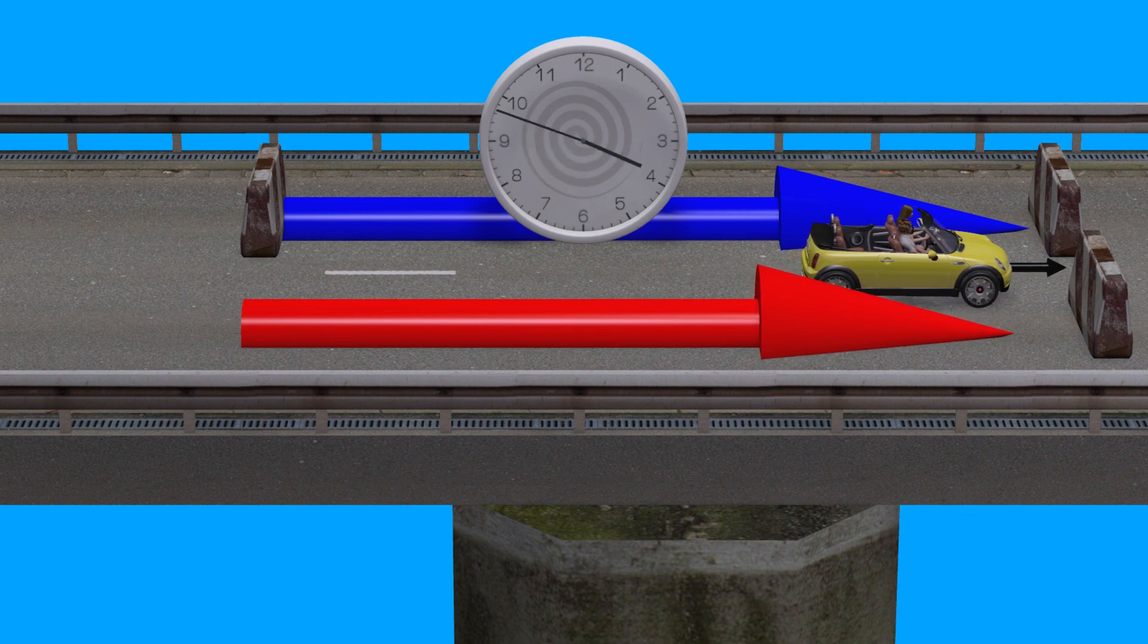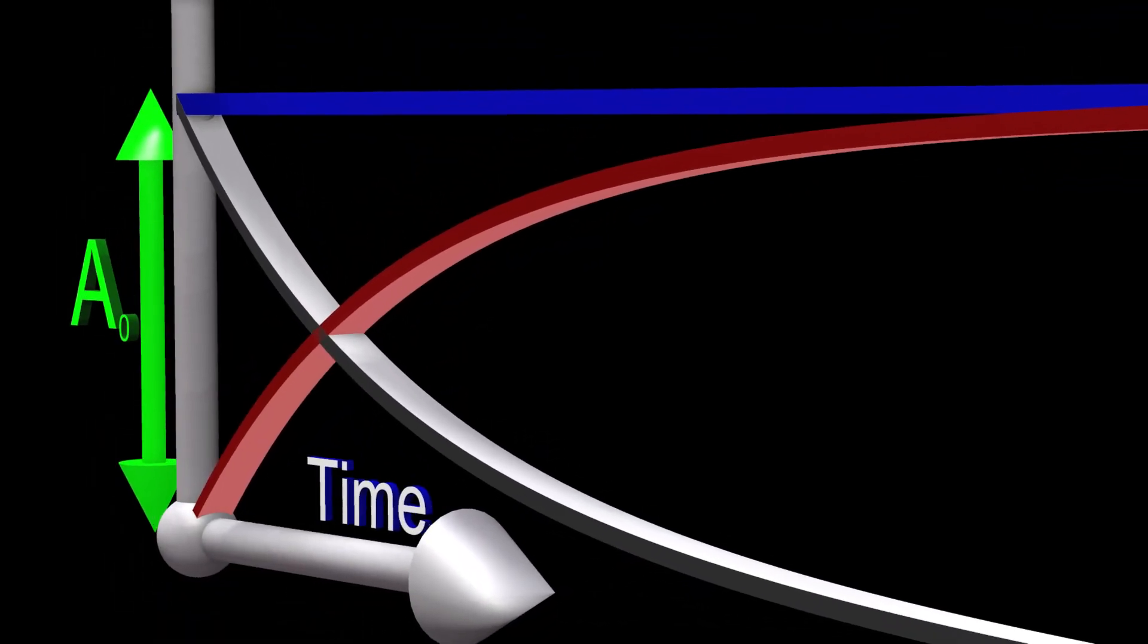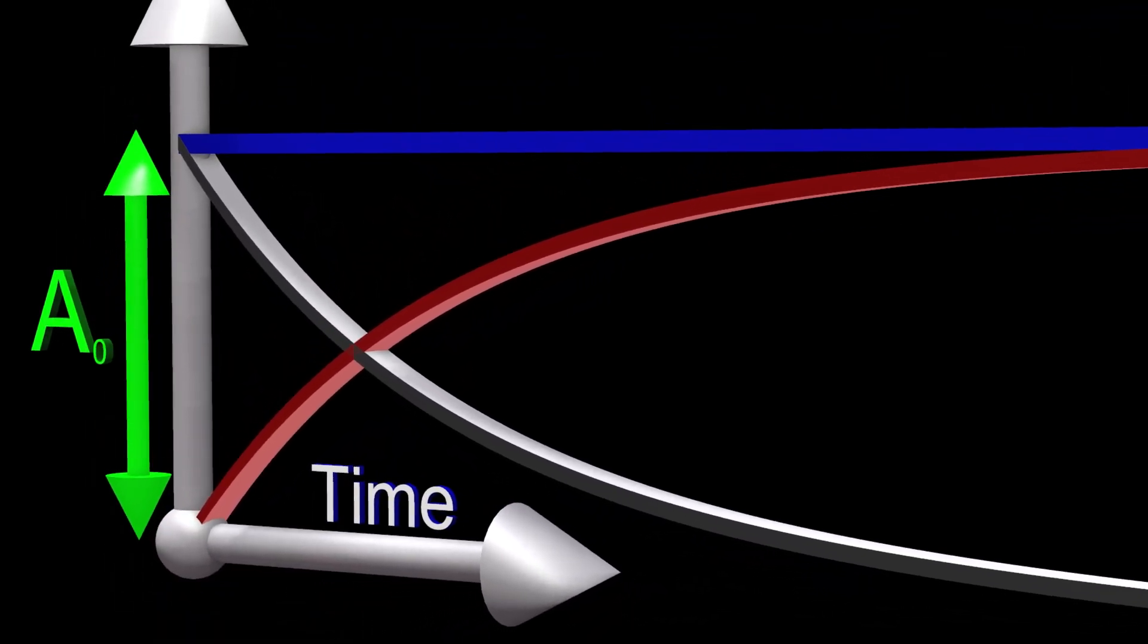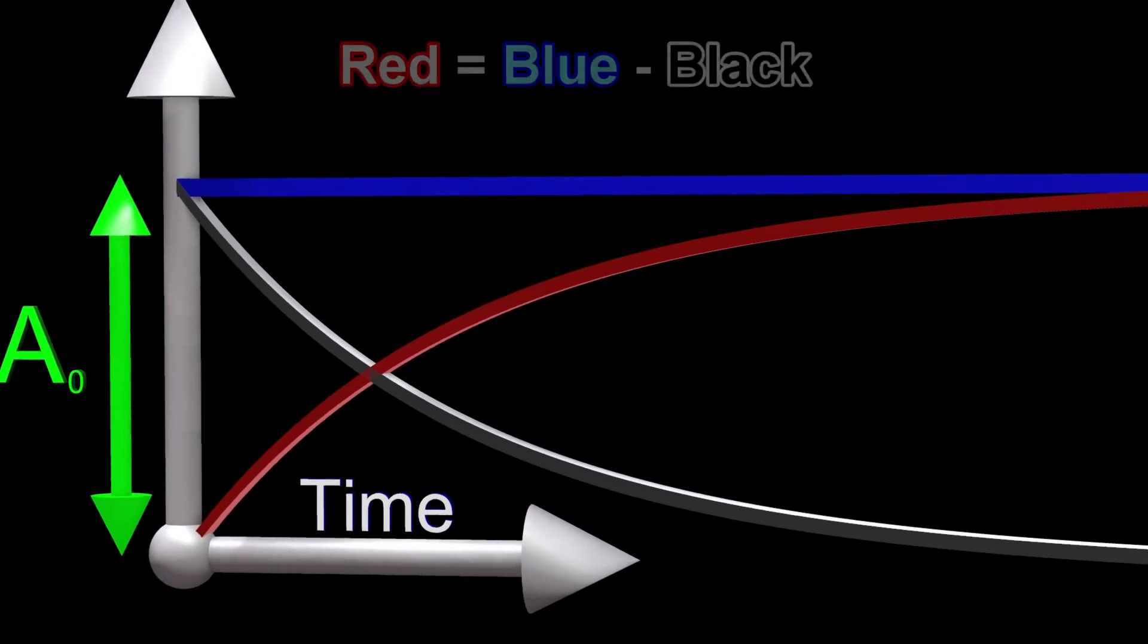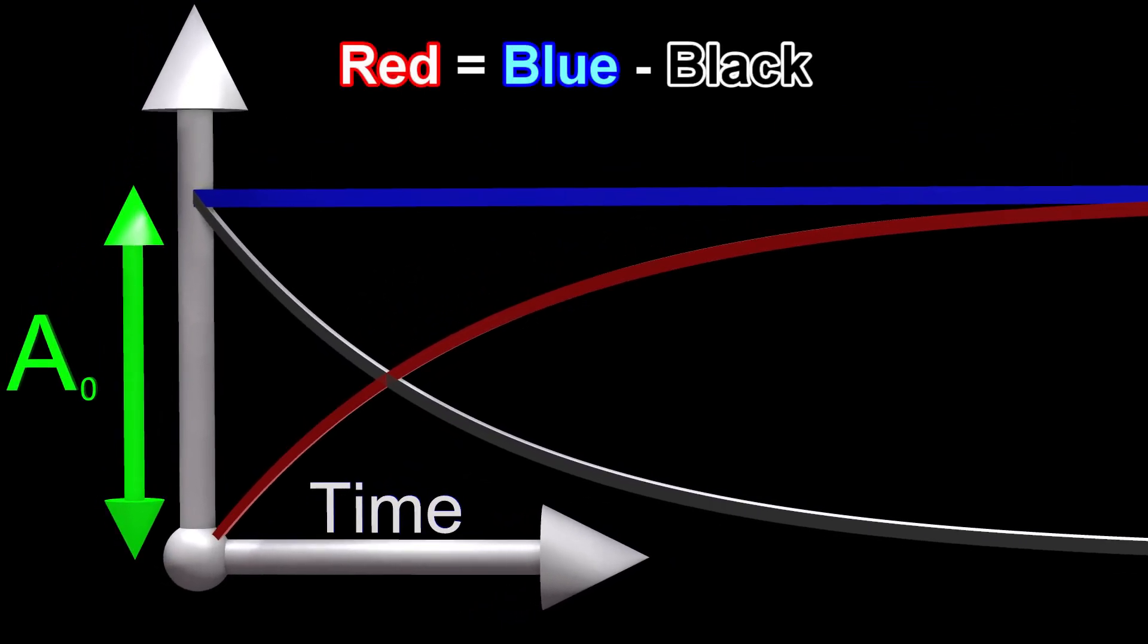And the red arrow represents the distance we have traveled so far. The lengths of each of these arrows, as a function of time, look like the following. The red curve is equal to the blue curve minus the black curve. We get this equation.